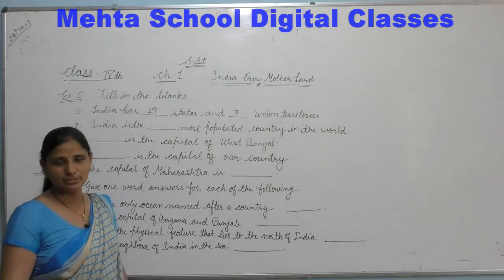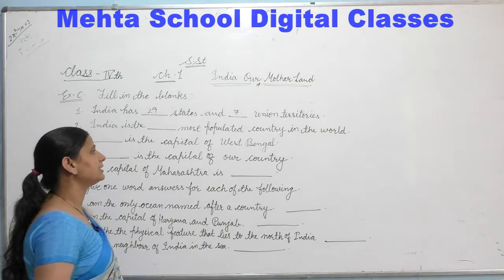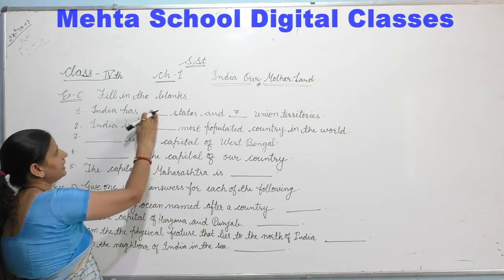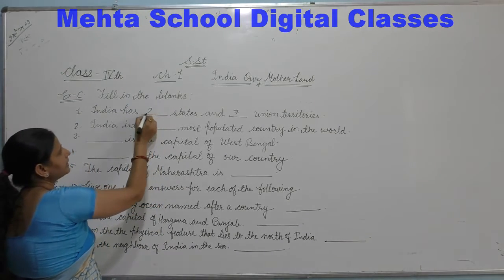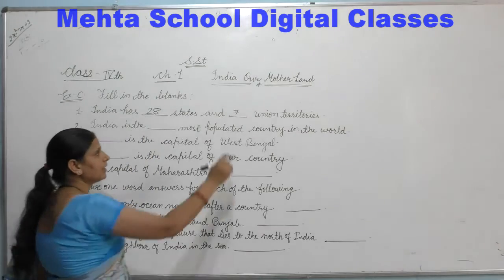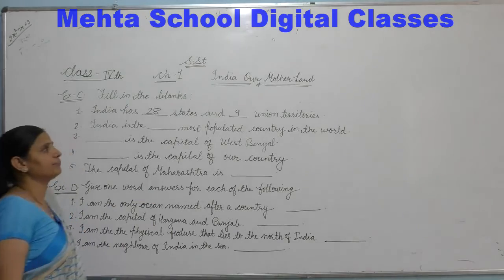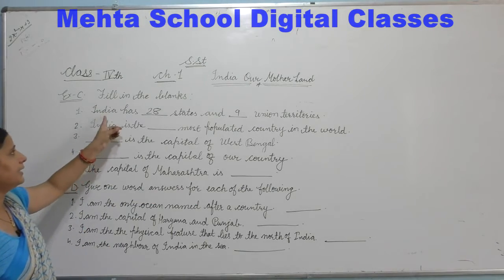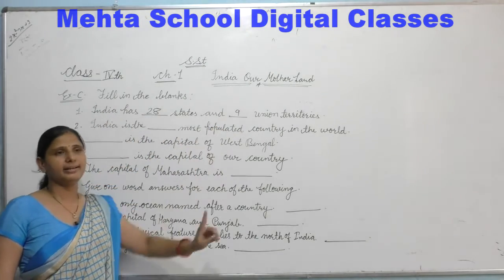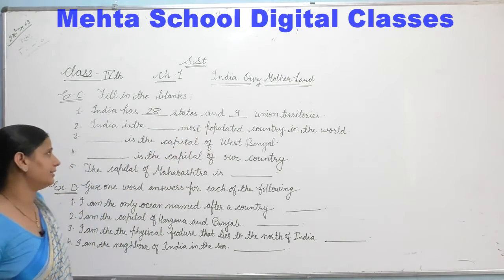But this has changed recently. The number of states is now 28, and union territories are now 9. So India has 28 states and 9 union territories.